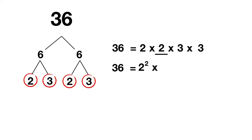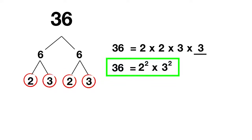Then we have to multiply this by the two 3's. How can we write those using exponents? Well 3 is being multiplied once, twice, so it's 3 to the power of 2. This is the other way to write the prime factors of 36.